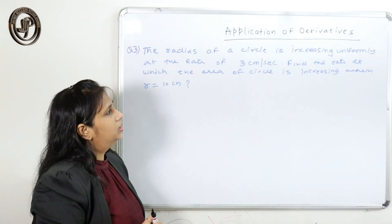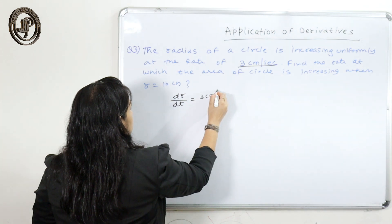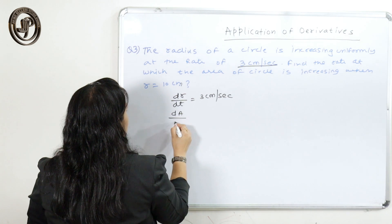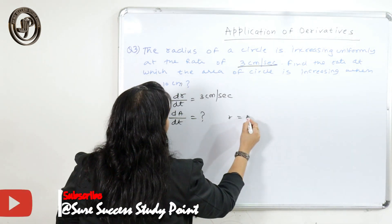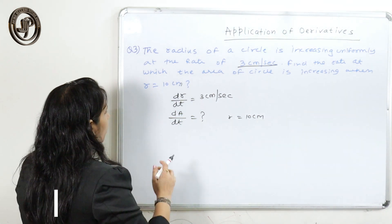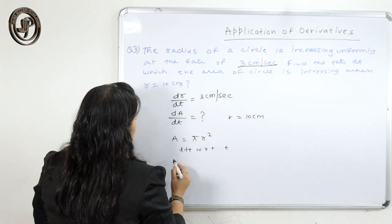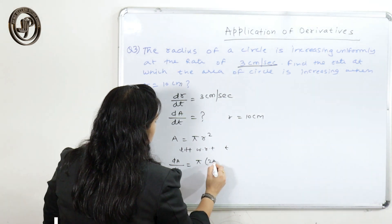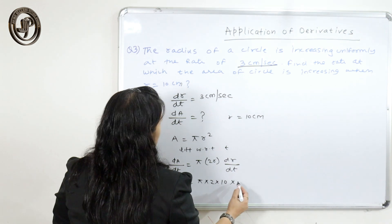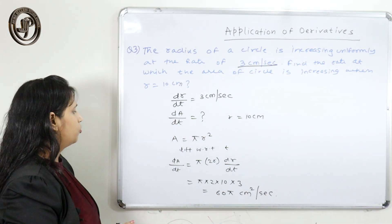The radius of a circle is increasing uniformly at a rate of dR/dt = 3 cm/s. Find the rate at which the area is increasing when the radius is 10 cm. Using A = πr², differentiate with respect to t: dA/dt = 2πR·(dR/dt). Substituting values: dA/dt = π × 2 × 10 × 3 = 60π centimetre square per second. That is the rate of change of area with respect to t.